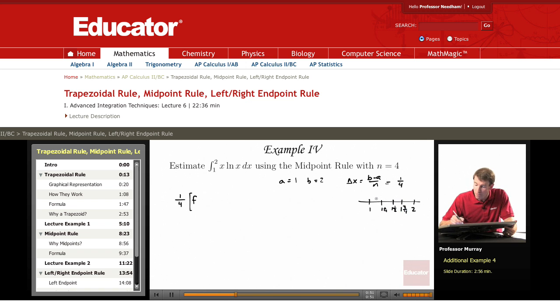Now we want the midpoints of those four intervals. The midpoint of the first one is 1 and 1/8. The midpoint of the second one, between 1 and 1/4 and 1 and 1/2, is 1 and 3/8. The midpoint of the third one is 1 and 5/8. And the last one is 1 and 7/8.